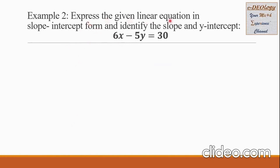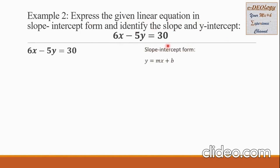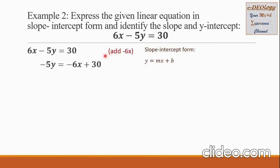Let us have example 2. Express the given linear equation in slope-intercept form and identify the slope and y-intercept of this line: 6x minus 5y equals 30. Our slope-intercept form gives us the idea that y must be alone on the left side, meaning the variable x and the constant should be on the right. So we have 6x minus 5y equals 30, and we want to remove the 6x from the left side.